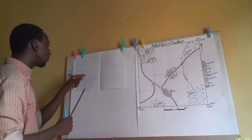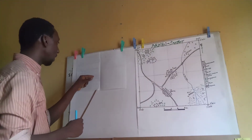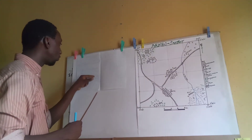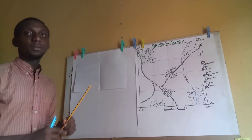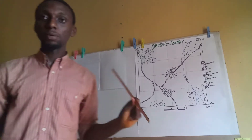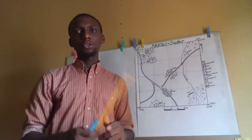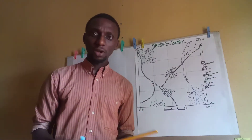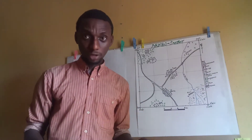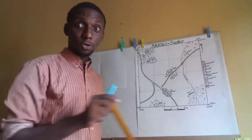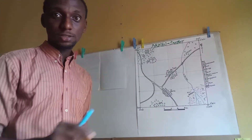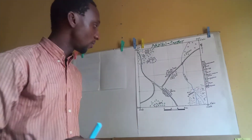Step number one says: obtain the scale of your map in ratio form of one is to something. This is very important. I taught in the last class how to read off the scale of a map, so now we are going to apply it to get results.